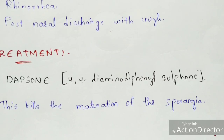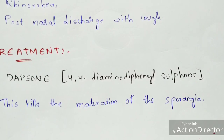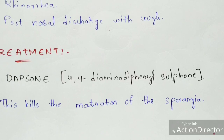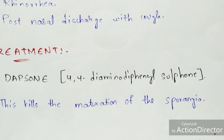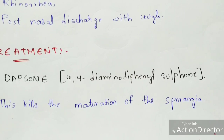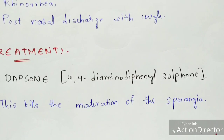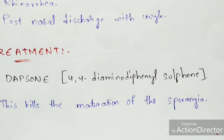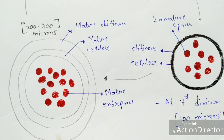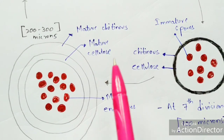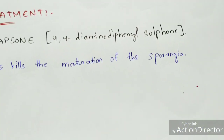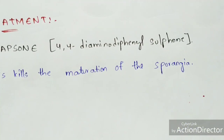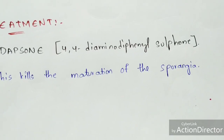The treatment discovered so far in India is dapsone. Its IUPAC name is 4,4'-diaminodiphenyl sulfone. The main purpose of this medicine is to kill the mature sporangia — it stops the maturation of the sporangia, preventing the life cycle from continuing.